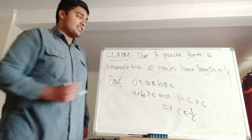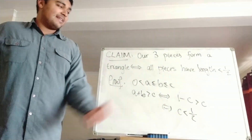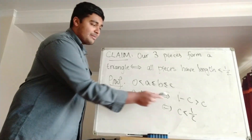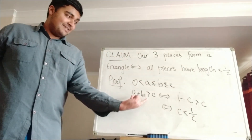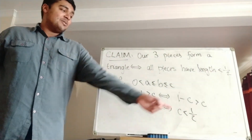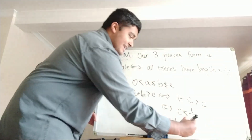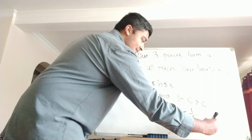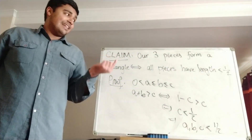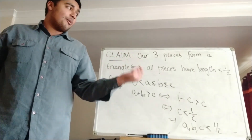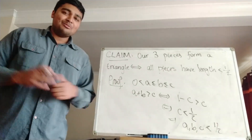Now let's prove the left-to-right direction. Suppose we have three pieces which form a triangle. Then we need all pieces to have length less than one half. If three pieces form a triangle, then a + b > c, which implies 1 − c > c, which implies c < 1/2. And since a ≤ b ≤ c, this implies that a, b, and c are all less than one half. So that proves the left-to-right direction as well, completing the proof of our claim.